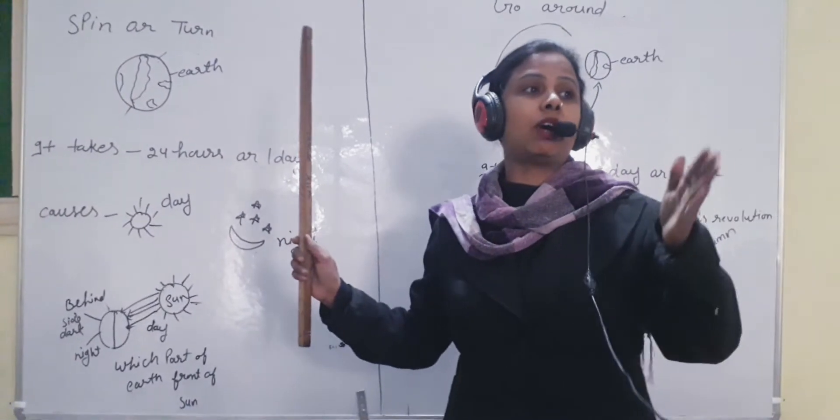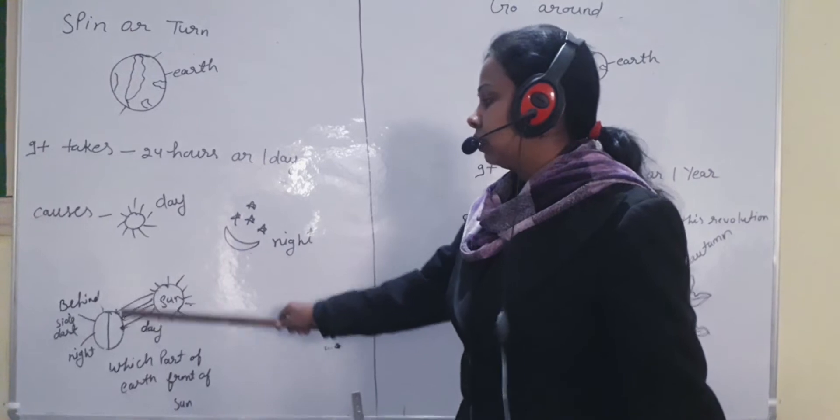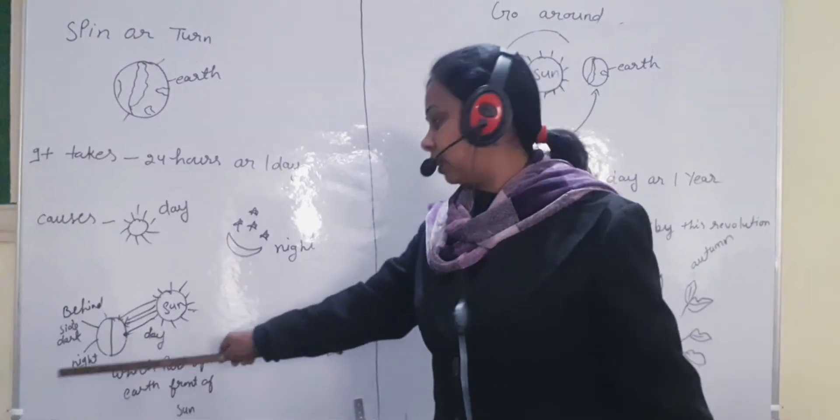Day and night changes. You can see when the earth is in front of the sun, this is the day. And the behind part of the earth, this is night.